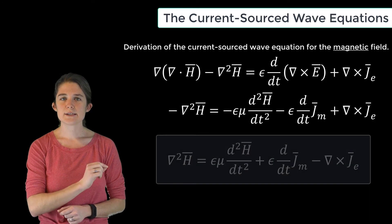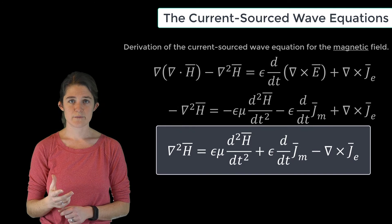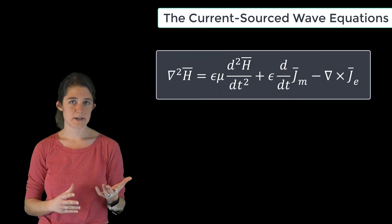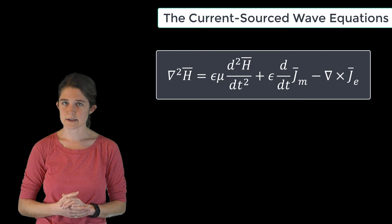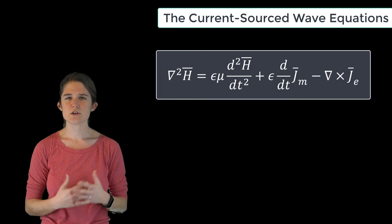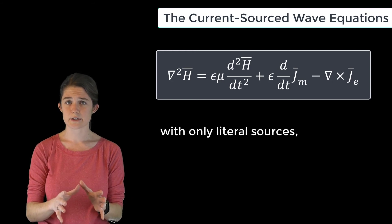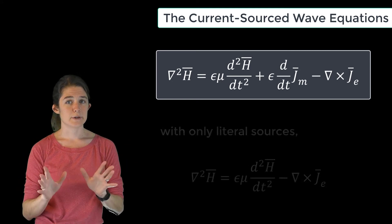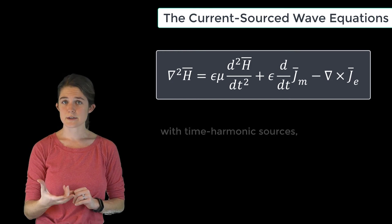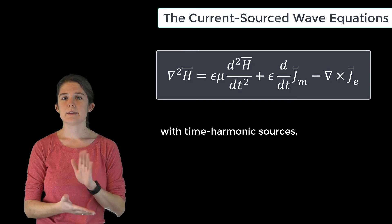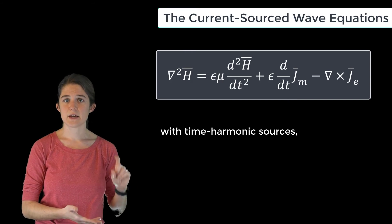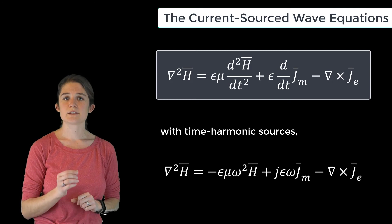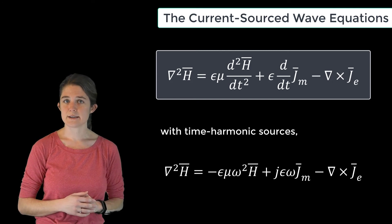Finally, from the solenoidal law we know that the divergence of H equals zero, so we can drop that term. This is our final statement of the current-sourced wave equation for H: the Laplacian of H equals mu epsilon times the double time derivative of H, plus epsilon times the time derivative of j sub m, minus the curl of j sub e. If you choose to use only literal sources, j sub m becomes zero and the expression simplifies. Alternatively, if you assume all sources are time-harmonic, the d/dt terms become j omega, and the wave equation becomes: the Laplacian of H equals negative mu epsilon omega squared H plus j epsilon omega j sub m minus del cross j sub e.